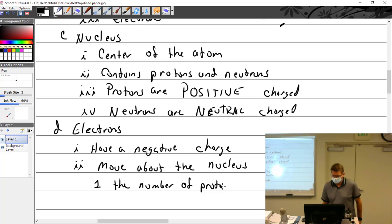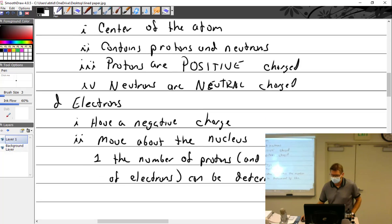The number of protons, and thus the number of electrons, can be determined by the periodic table of elements.